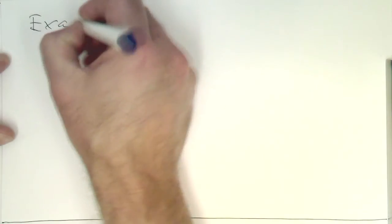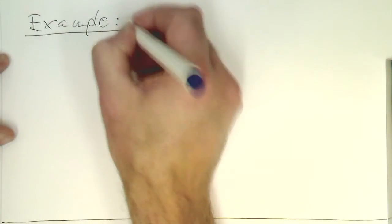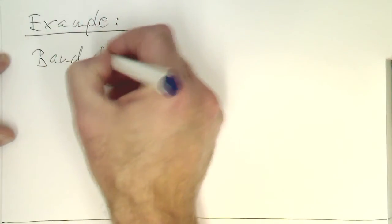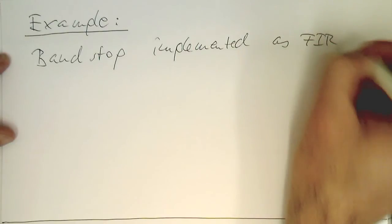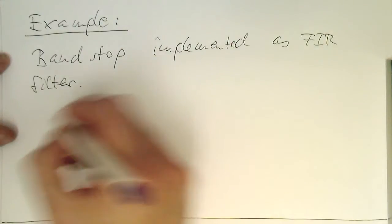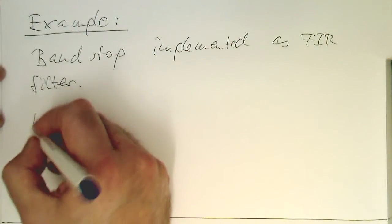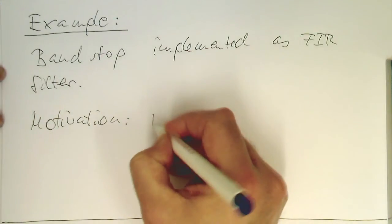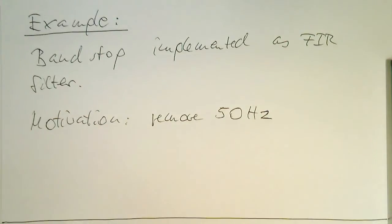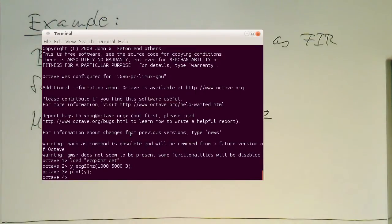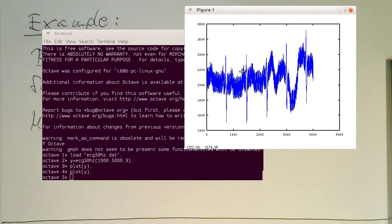Let's now do an example after quite a lot of theory. The example is a band stop filter implemented as an FIR filter. The motivation here is to remove 50 Hz — it's one of the most important tasks in filtering to get rid of 50 Hz mains. I've got an ECG loaded here, called ECG50Hz.dat, with 4000 samples. Let's plot this — it looks quite 50 Hz polluted.